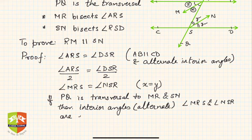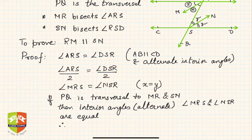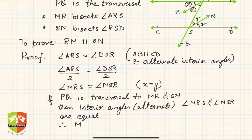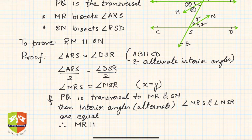Therefore, by the converse of the theorem — which states that if alternate interior angles are equal then the lines are parallel — we can say MR is parallel to SN. Hence proved.